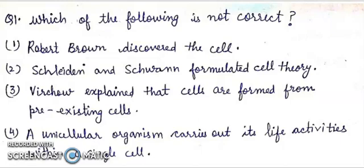First question: which of the following is not correct? First, Robert Brown discovered the cell. Second, Schleiden and Schwann formulated cell theory. Third, Virchow explained that cells are formed from pre-existing cells. Fourth, unicellular organisms carry out their life activities within a single cell.